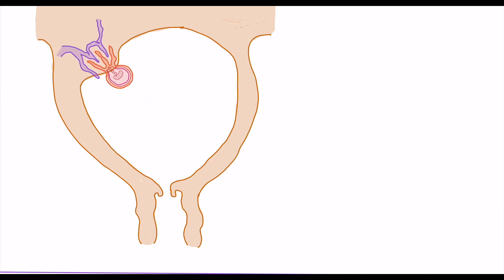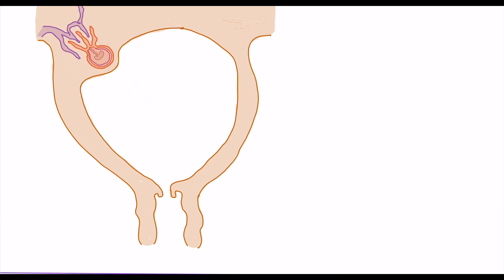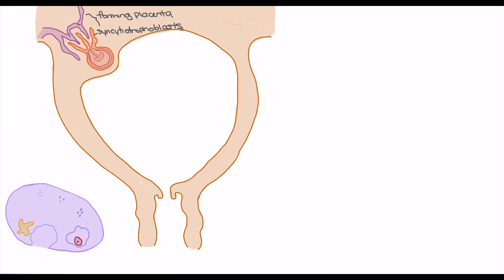We've had implantation and fertilization occurring, and now we have our chorion forming as well as some of our placenta. We look at these finger-like projections coming off the chorion — those are our syncytiotrophoblasts, the differentiated trophoblasts that are going to help form placental blood supply as well as hormone release. Importantly, the syncytiotrophoblasts and the maternal blood supply are not meeting, and that's one of the core principles of the placenta.